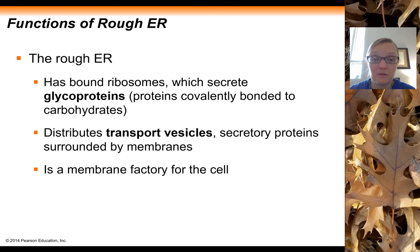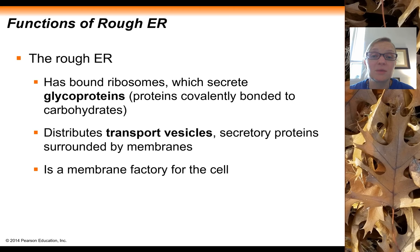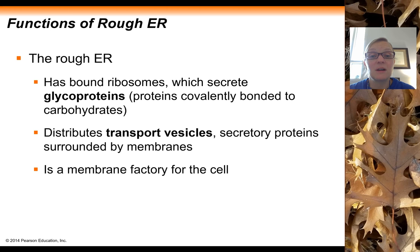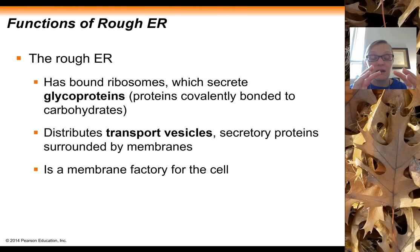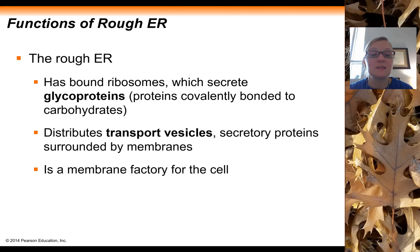On top of helping polish proteins, the rough ER also helps make membrane for the cell, including the production of phospholipids. Both smooth and rough ER help make phospholipids, which get incorporated into ER membranes. As vesicles pinch off that membrane, it can eventually become part of the plasma membrane or the membrane of lysosomes — so the ER is really a membrane factory for the cell.